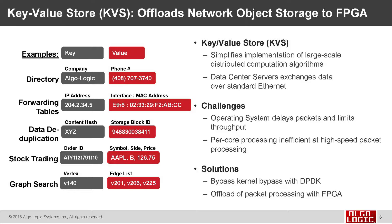For stock trading you can have order IDs associated with a stock symbol, whether it's on the buy or sell side, and what price. For graph search you can have vertices and the edges that connect to them. The key value store is agnostic to the data you put into it and gives you the flexibility of associating values with keys.